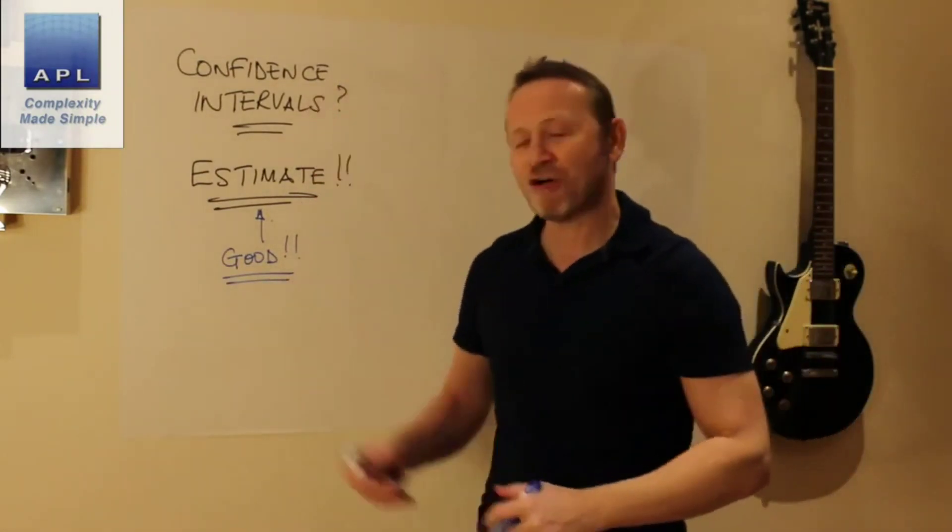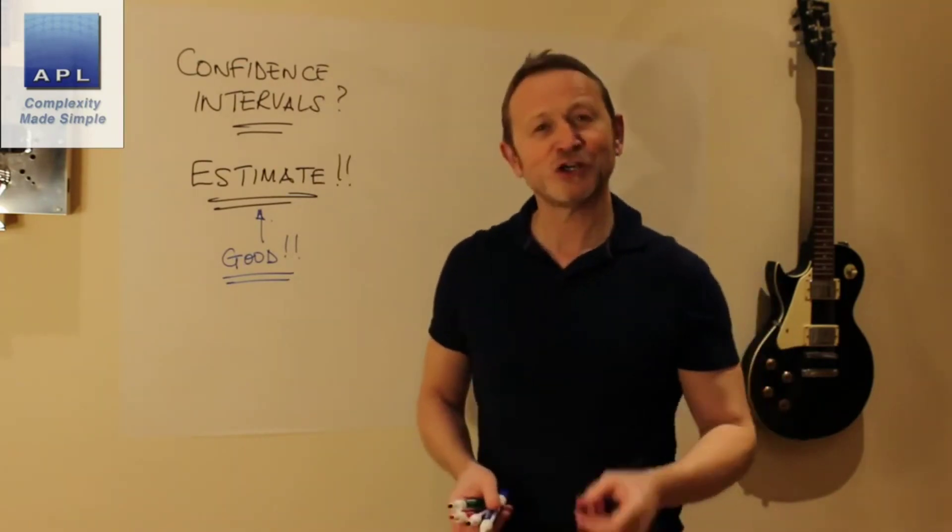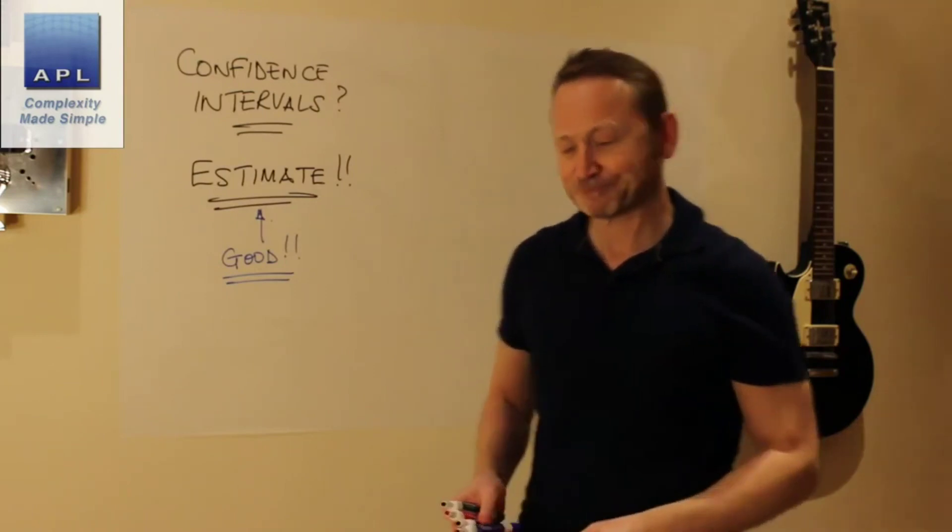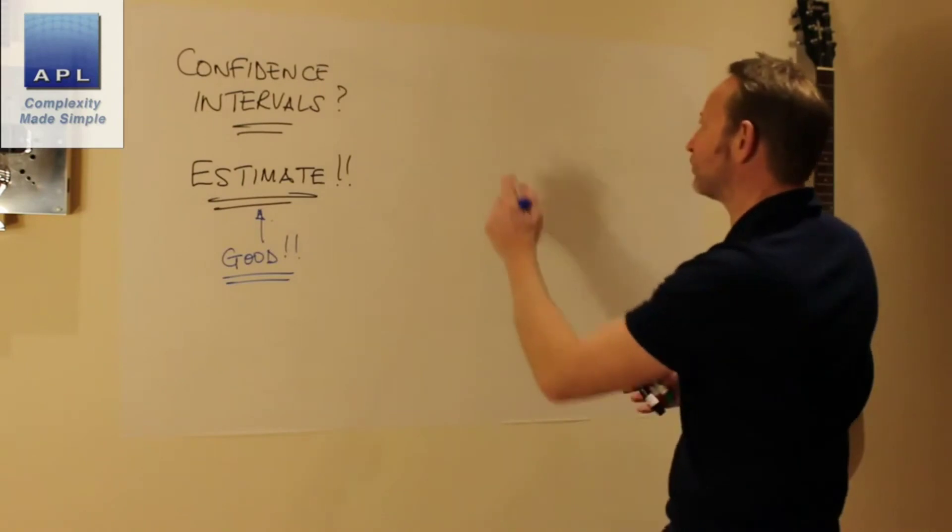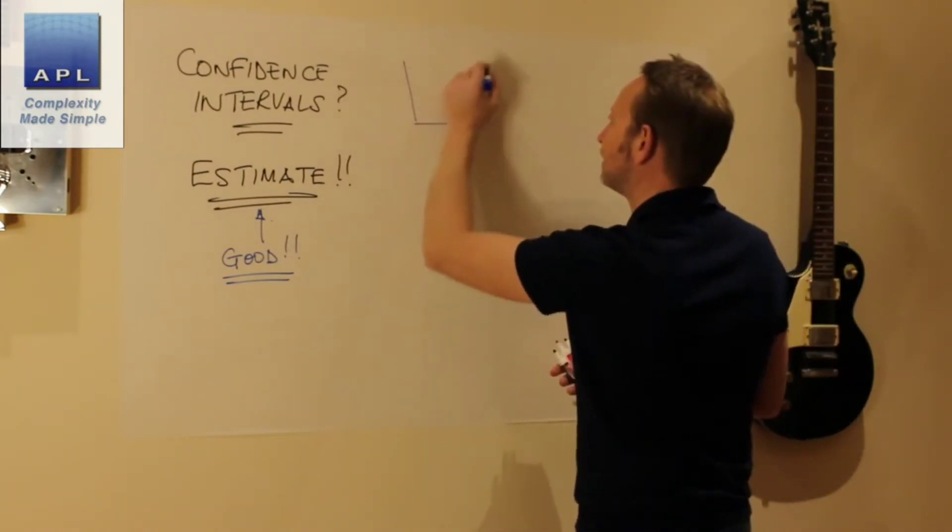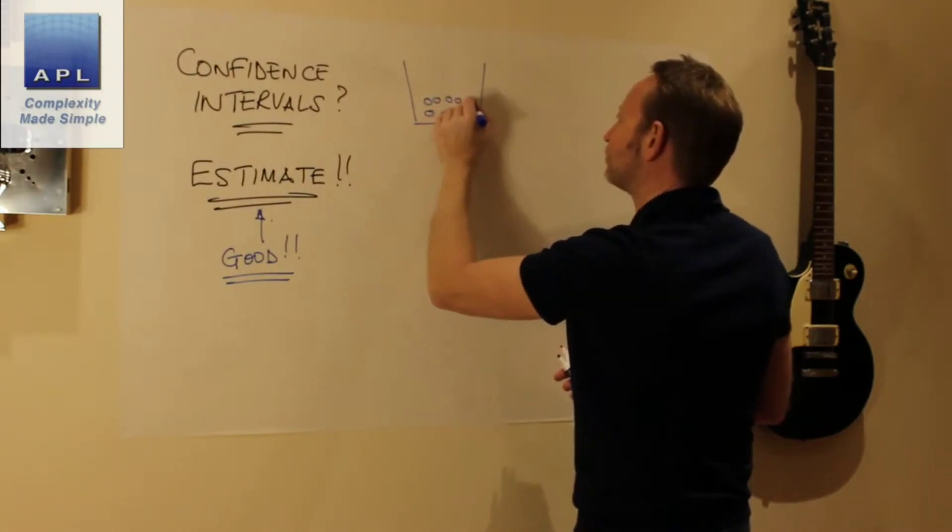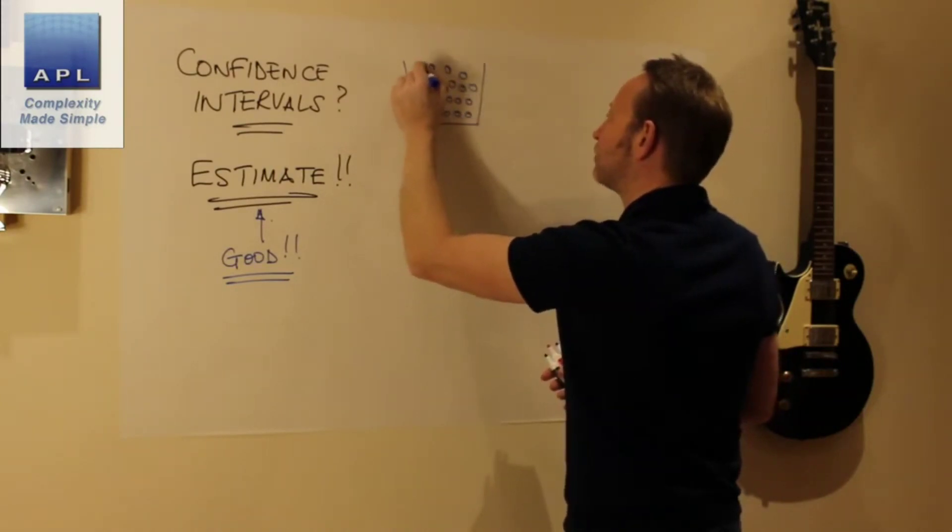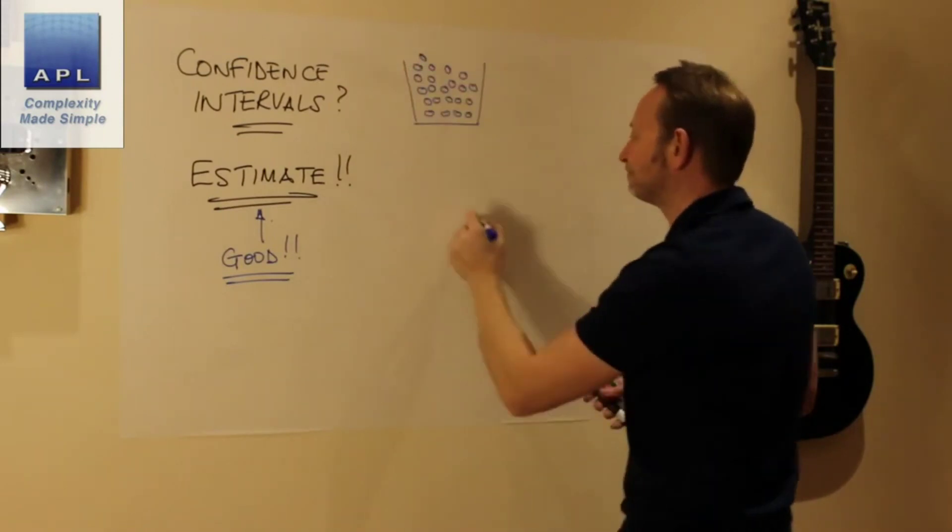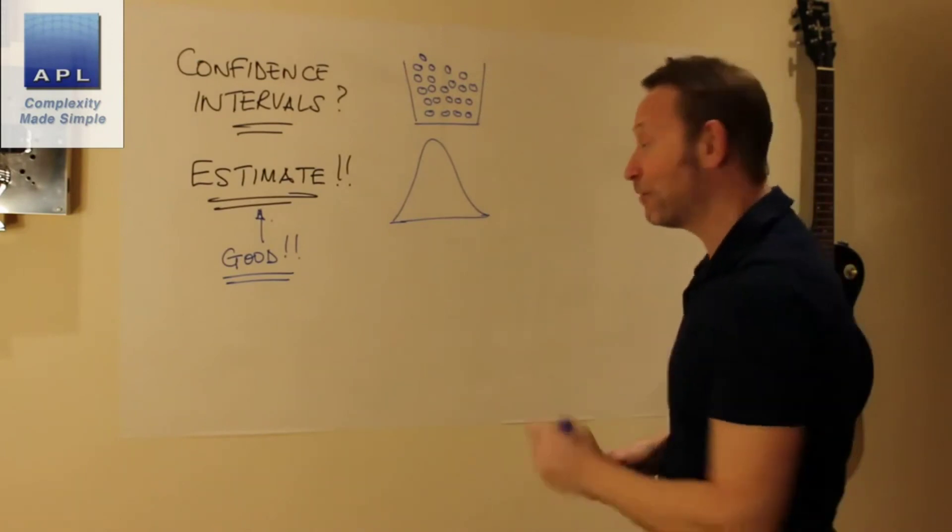And what confidence intervals essentially do is tell you how good your estimate is. So how would this work? Well, essentially you have a process. The process has produced some items - there we have a bucket of items. What we would like to understand as a distribution, clearly in the bucket we're going to sample from that distribution in a moment.